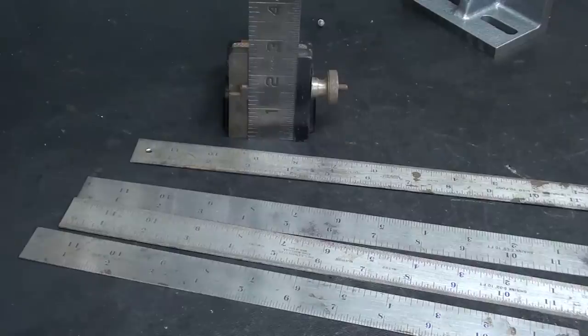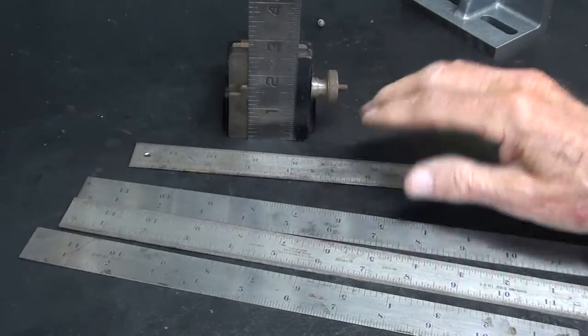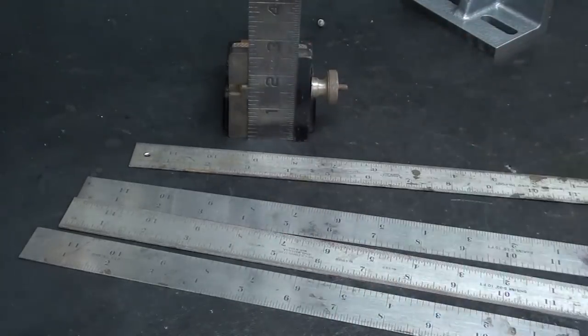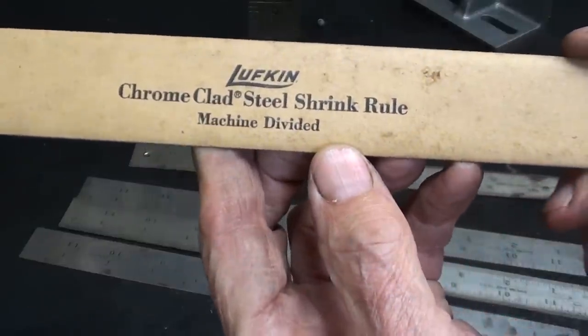In every one of the catalog descriptions, it mentions this is a handy tool for a pattern maker. So these are shrink rulers here, these four, and if you do not know what a shrink ruler is, I think maybe I'll do another short subject on that.